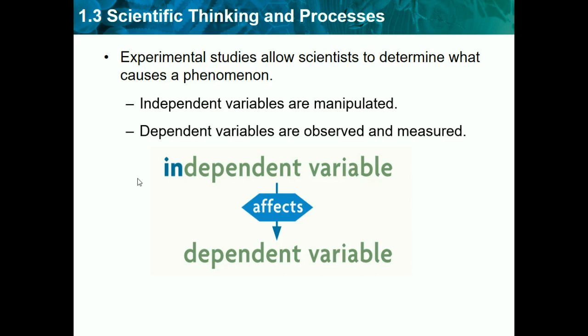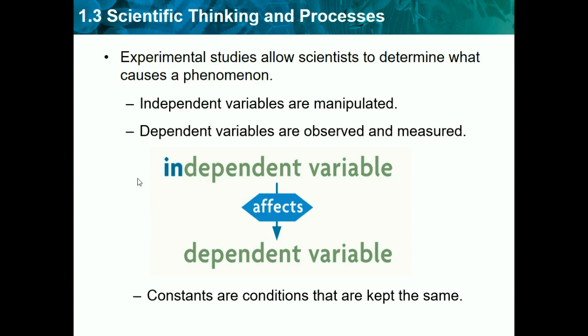We need to really understand this topic. Constants are conditions that are kept the same. In our experiment, constants would be things like the type of plant, the type of soil, the pot the plant is in, the amount of water, and the type of water — anything that stays the same. And another thing we need to remember is the control group. It's basically the thing that doesn't receive the independent variable, so in our experiment it would be a plant without any fertilizer. It's like a standard that we can compare our results to.